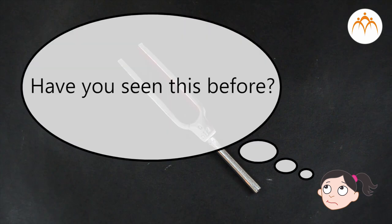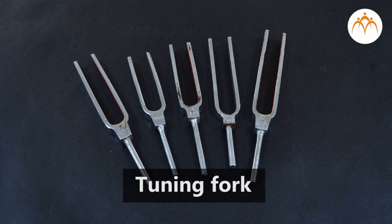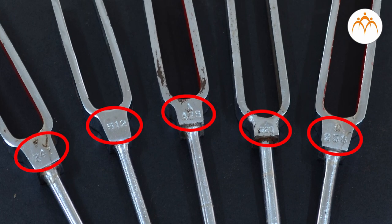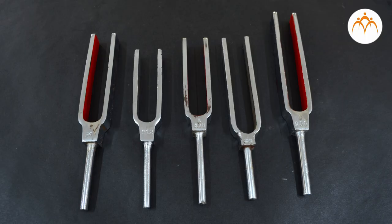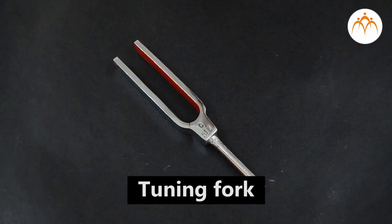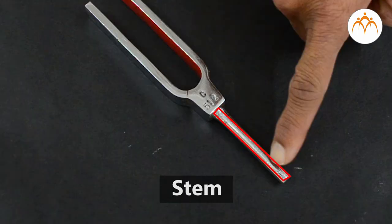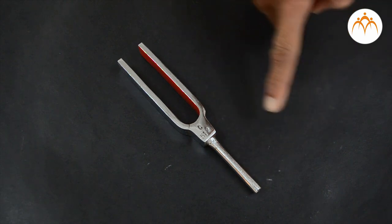Have you seen this before? These are called tuning forks. There is some number written on each. We will see later what its significance is. It has two prongs and a common base. It is also called a stem. It is usually made of steel.